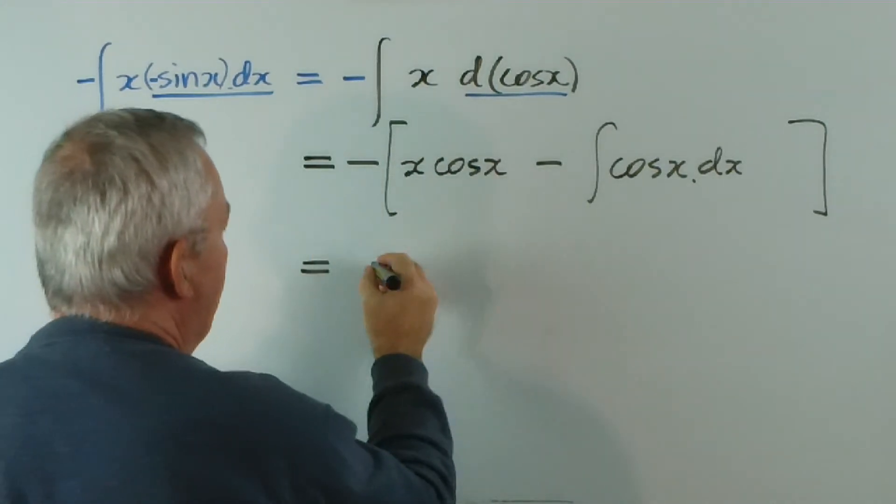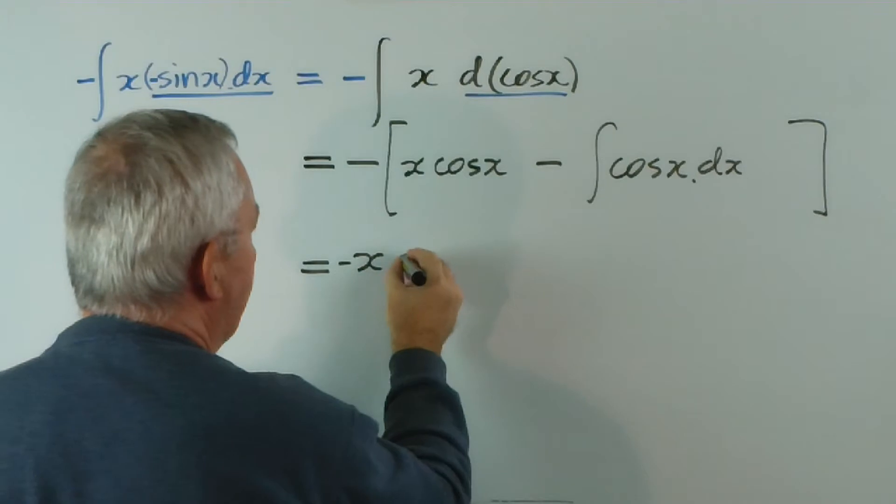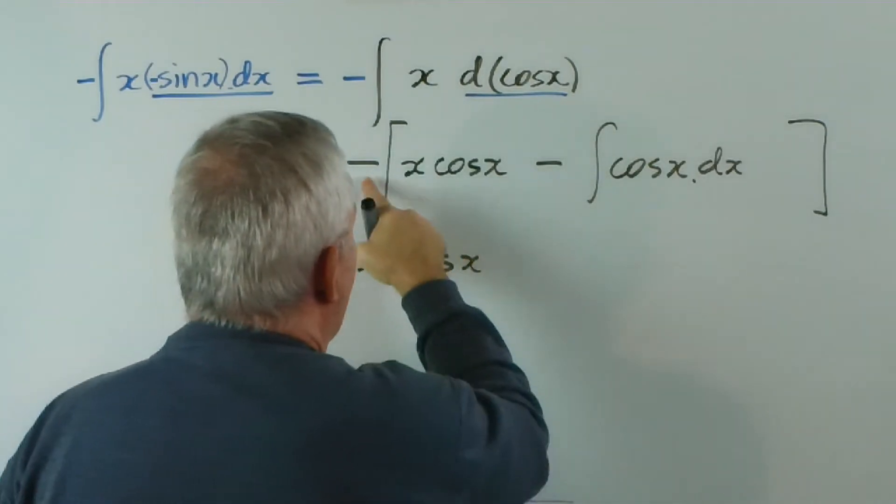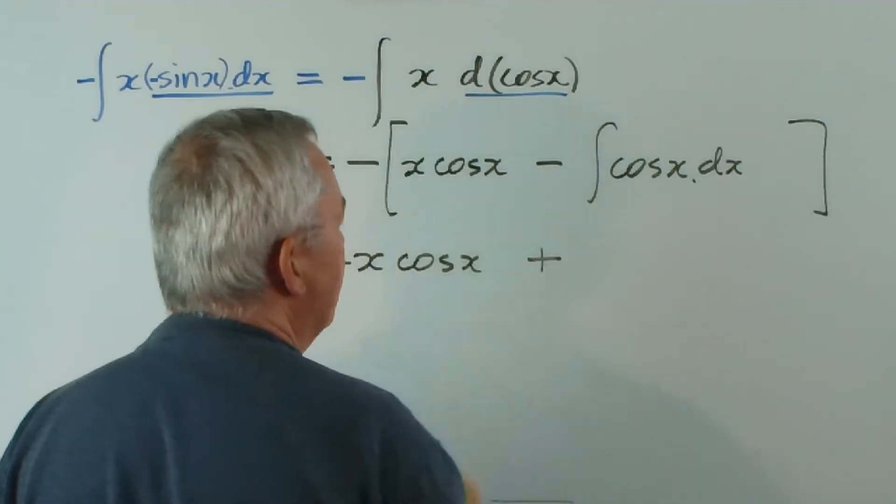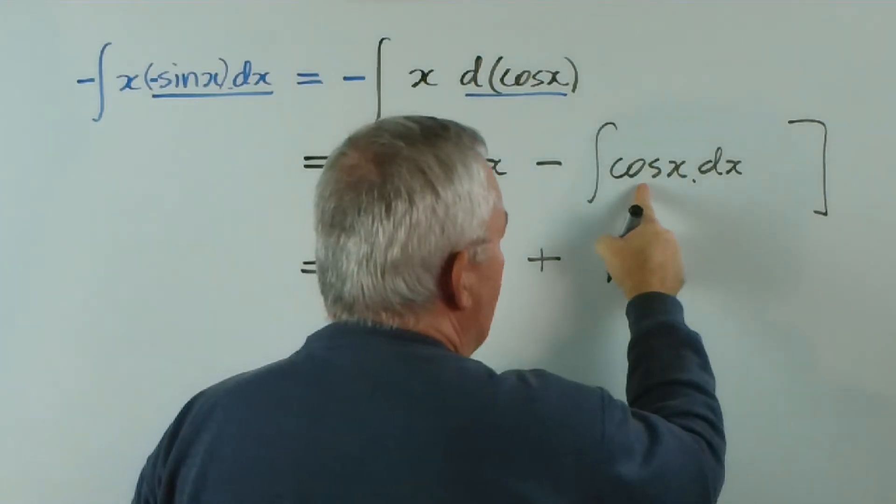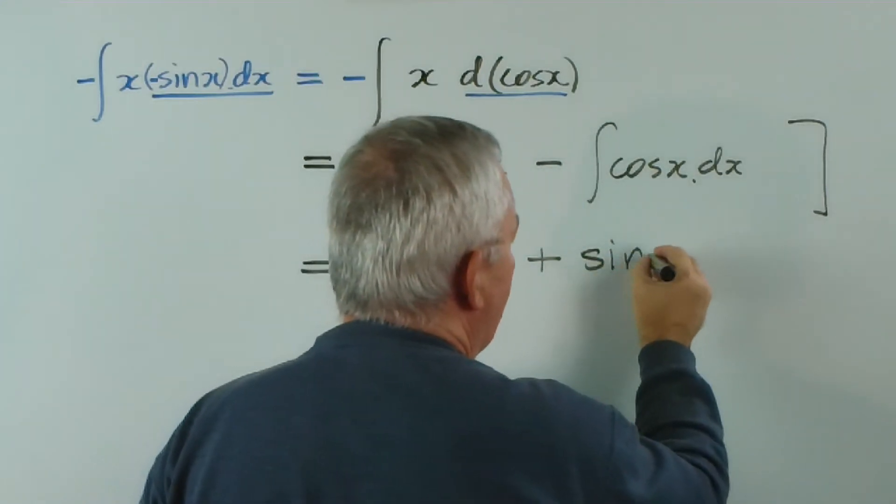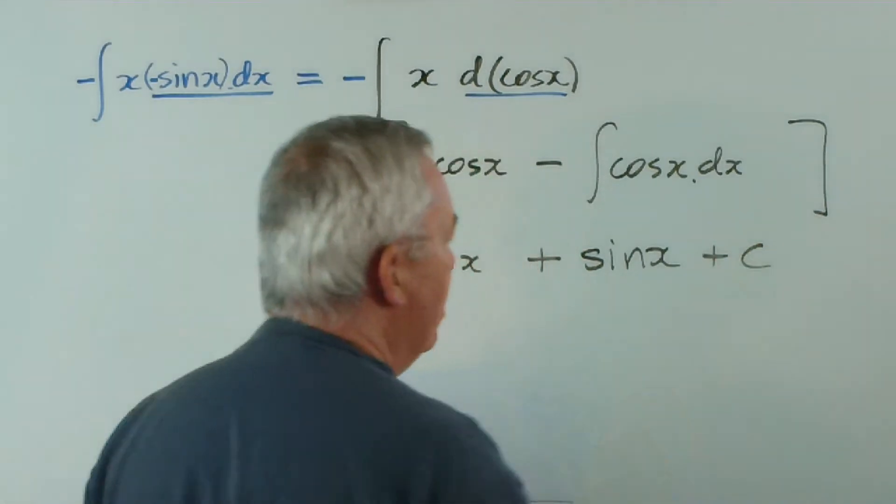So, what do we have? Negative this, negative x cos x, minus, minus, plus... And what's the integral cos x? It's simply sin x. There we go.